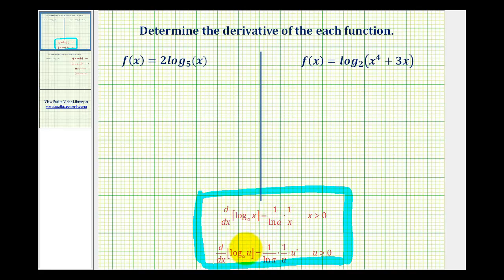But if we have a composite function where u is a function of x, we have to apply the chain rule. So the derivative of log base a of u with respect to x is equal to 1 divided by natural log a times 1 divided by u times u prime.